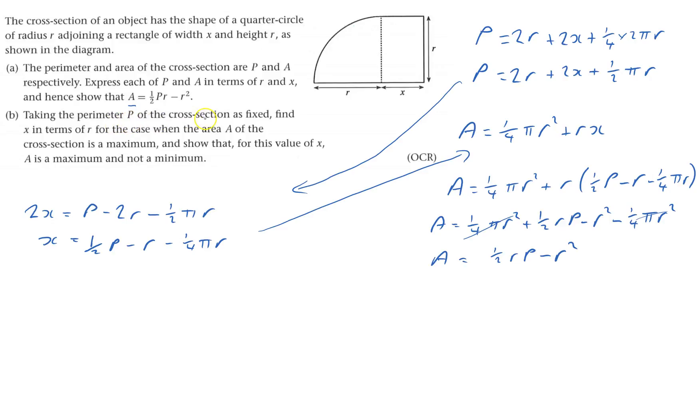Taking the perimeter of the cross section as fixed, so that means that's now a constant, so if I were to differentiate this, it won't affect things. Find x in terms of r for when the area of the cross section is maximum.